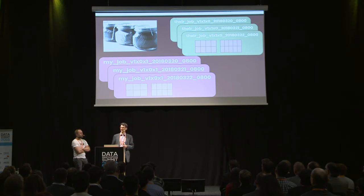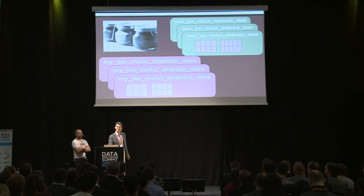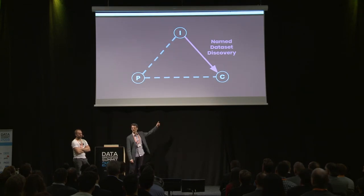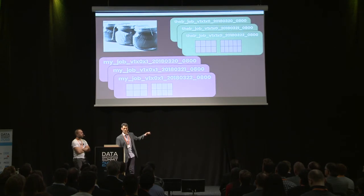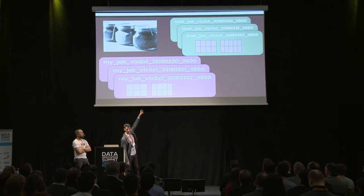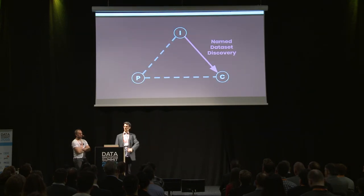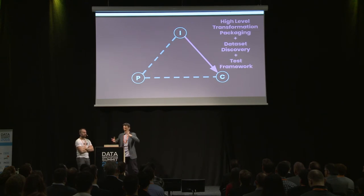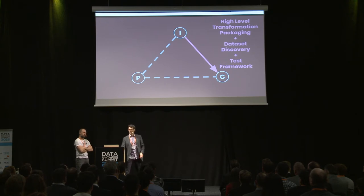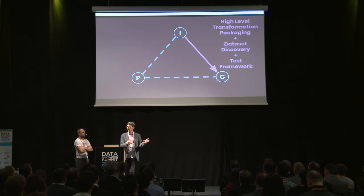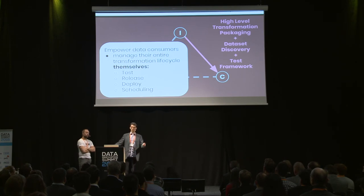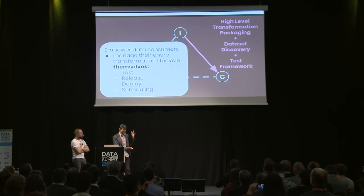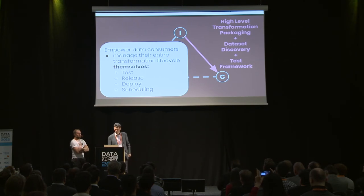The natural question is: how do I keep track of all this and make sure I'm querying the right database? The answer, as usual, is tooling. We provide a named dataset discovery tool that, out of all these databases — say my job version 0.1.0.1 — figures out which one you should take. Beyond HLTP and dataset discovery, we also provide a testing framework for Hive queries so you don't have to test in production and discover a bug three hours later. You can unit test away a lot of errors in your Hive code. All of this is about empowering data consumers and analysts to do as much work on their own as possible.